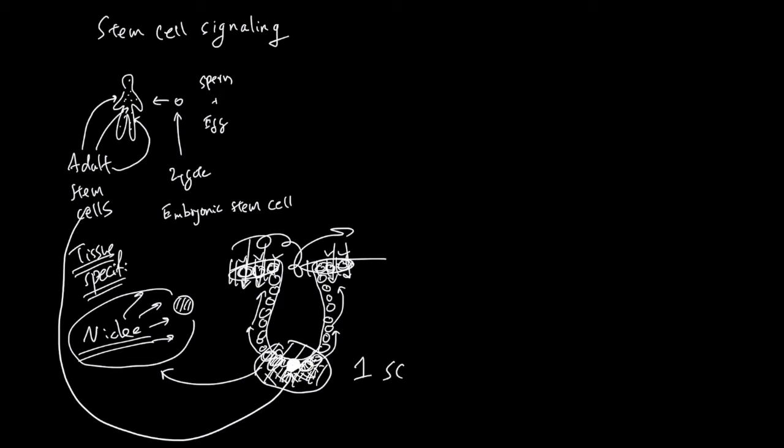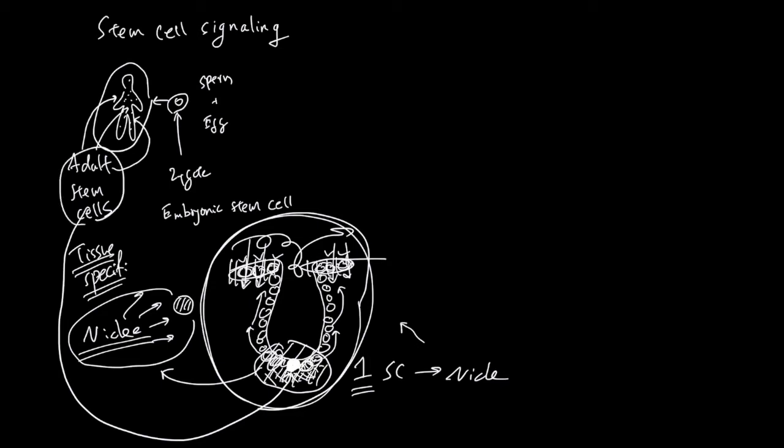The stem cell together with the niche can recreate this entire tissue. You just need one to create this entire tissue. Remember, you just needed one to create the entire human. An adult stem cell—you just need one to create that entire tissue or sometimes the organ.